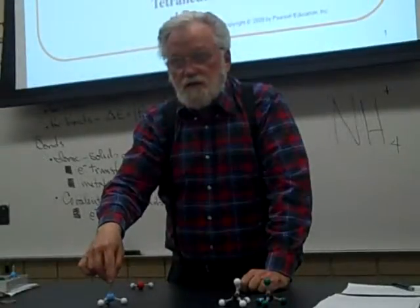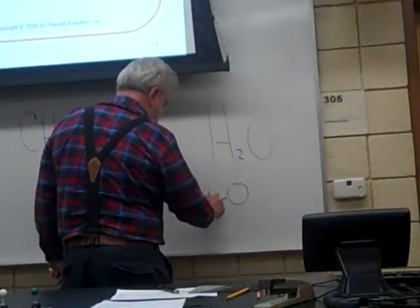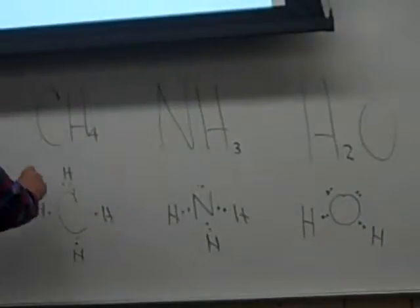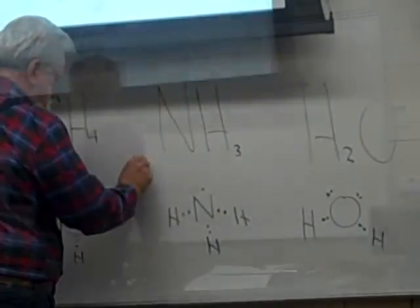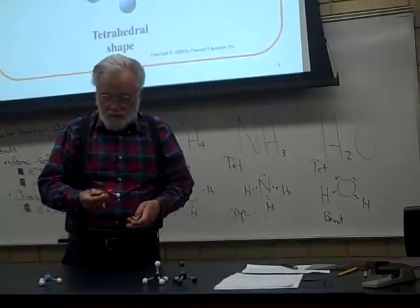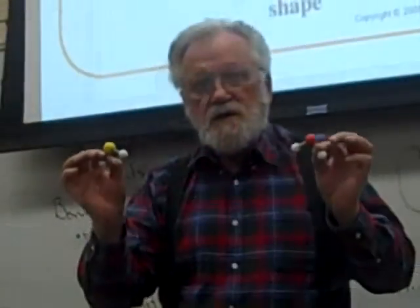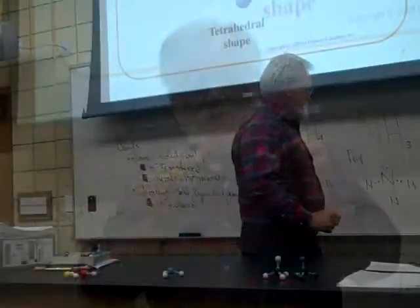What is the configuration of the electrons? Two electrons — one from each. The configuration of the electrons is still tetrahedral. Tetrahedral shapes.